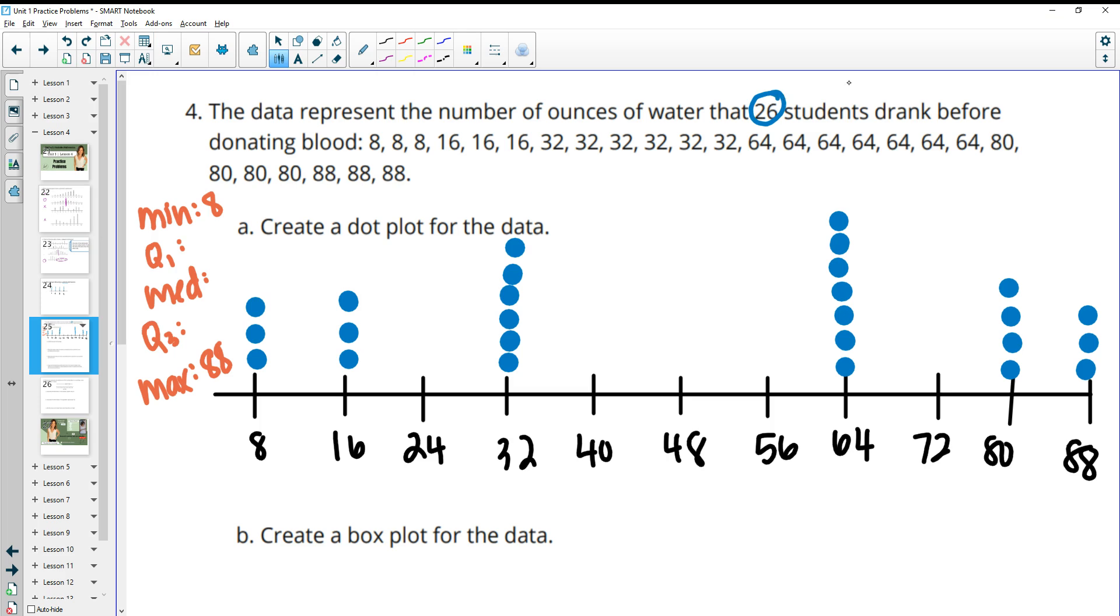So there's 26 numbers here. So the data is going to be split 13 and 13. So we can count to the middle. One, two, three, four, five, six, seven, eight, nine, 10, 11, 12, 13. So here's the two middle data points. So then we would average these together, which is just going to be 64 since they're the same number. So then that means that here's the exact middle of the data is right here.